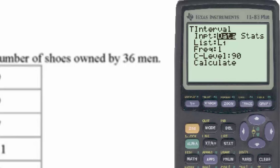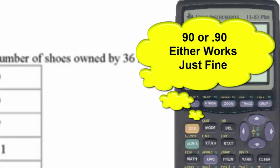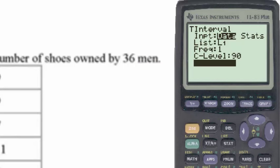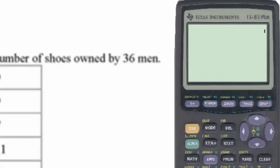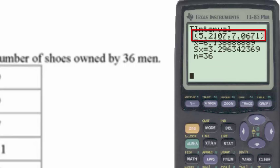The confidence level is 90%, and here we can put in 90 or 0.90. When we click calculate, we see a little busy signal, and then we'll see the interval.